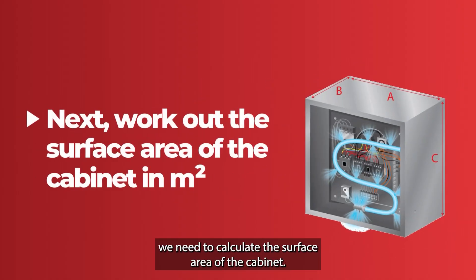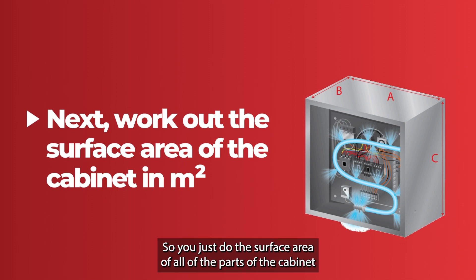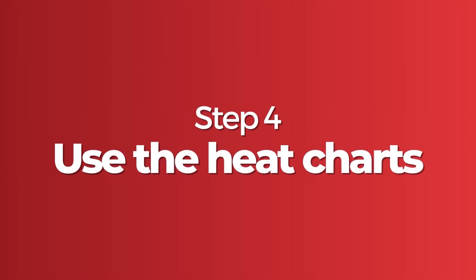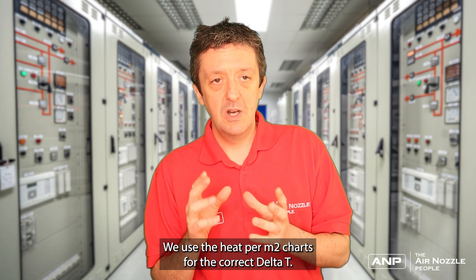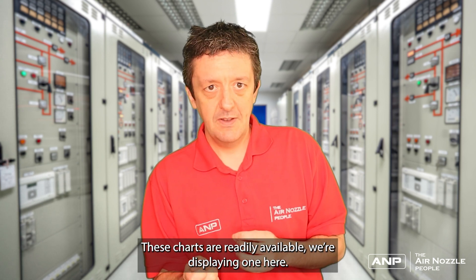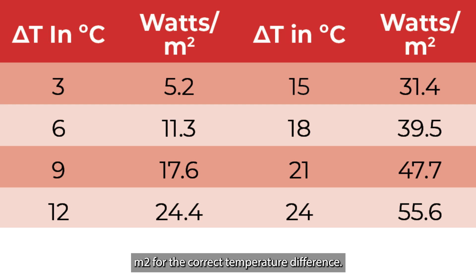Once we've worked that out, next we need to calculate the surface area of the cabinet. This is pretty straightforward as most cabinets are basic cuboids — just calculate the surface area of all sides, add them up, and that gives you the surface area in meters squared. We then use the heat per meter squared charts for the correct delta T. These charts are readily available — displaying one here — and this gives us a heat loss or gain per meter squared for the correct temperature difference.